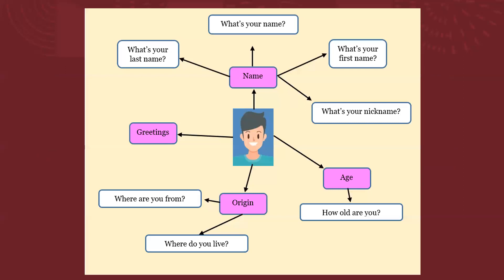So now, you have this chart, for example. What do we have here? We can have the name — we can say the name, the age, the origin, and a greeting. We can start with a greeting.